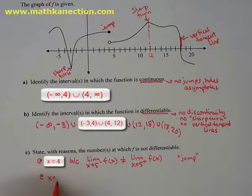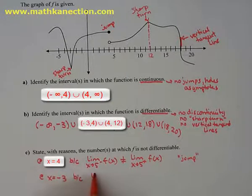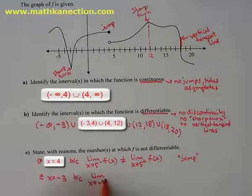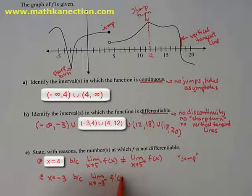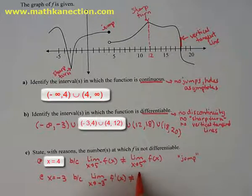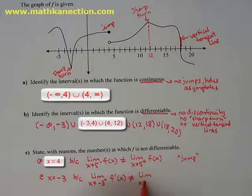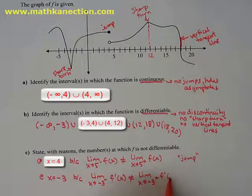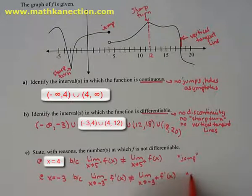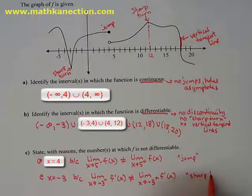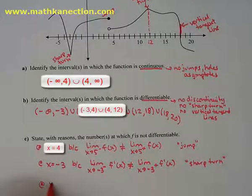At x equals negative 3, we have that sharp turn. The limit as x approaches negative 3 from the left of the derivative is not equal to the limit as x approaches negative 3 from the right of the derivative. This notation refers to the sharp turn. The slopes on the left and the slopes on the right are not equal to each other.